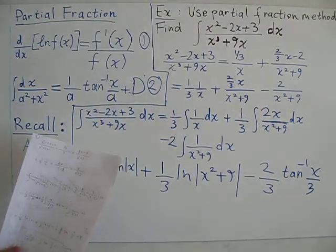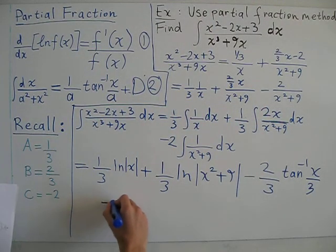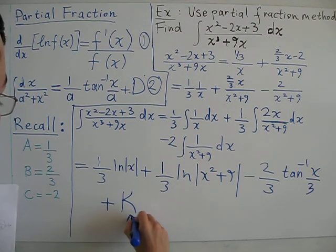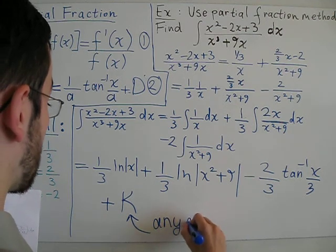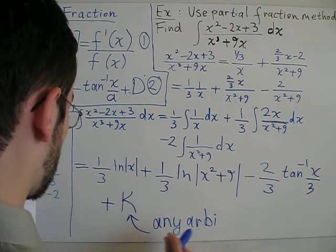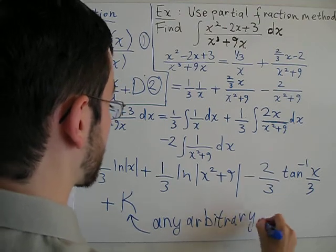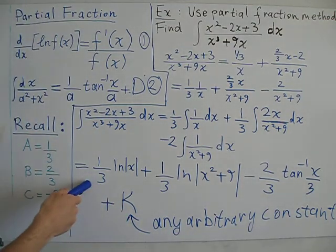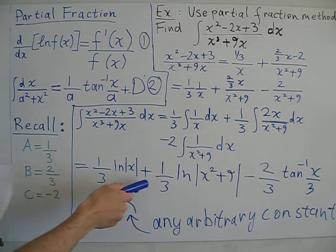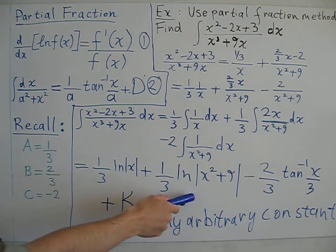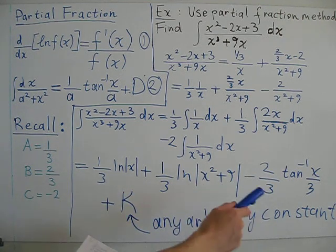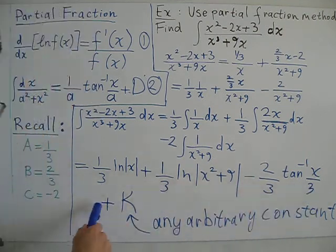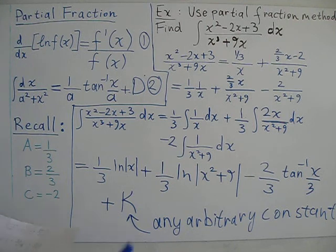But of course, we also have to add an arbitrary constant k to this final integral. So therefore, the final expression is given by 1/3 ln of the absolute value of x plus 1/3 ln of the absolute value of x squared plus 9 minus 2/3 tan inverse of x over 3 plus an arbitrary constant k.